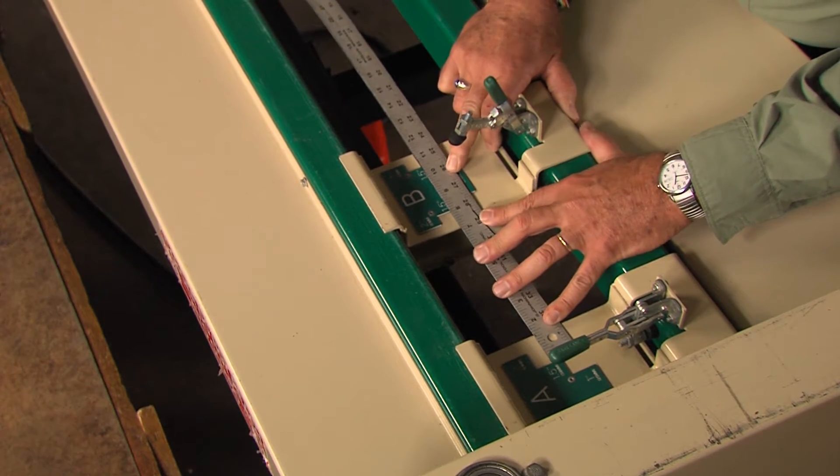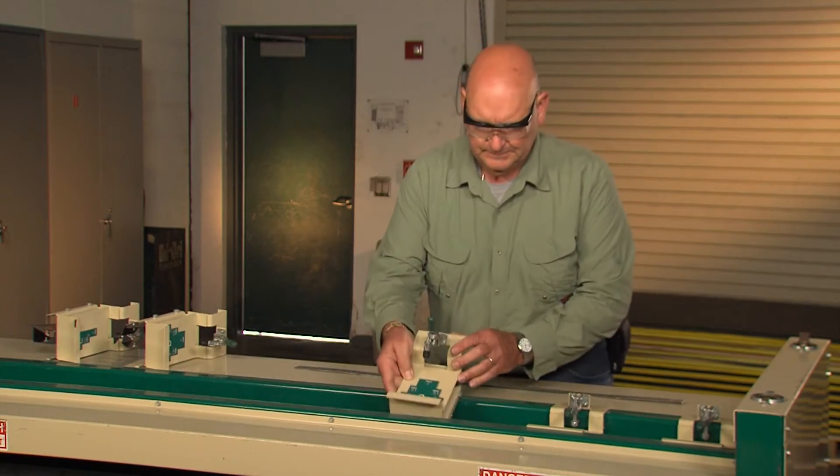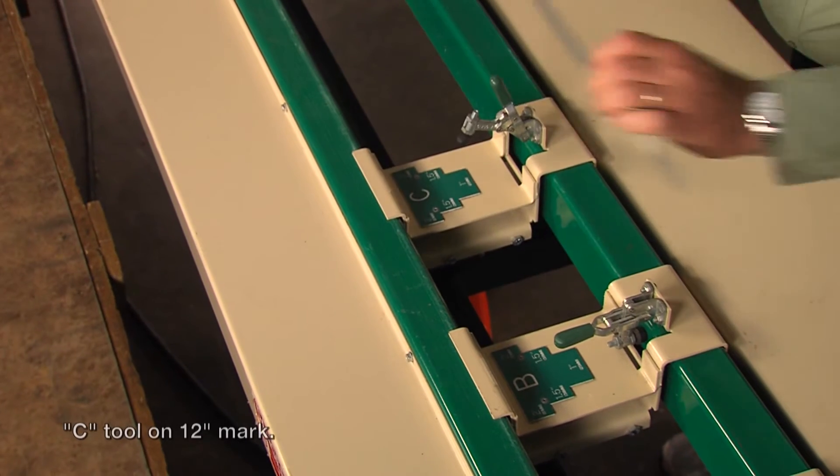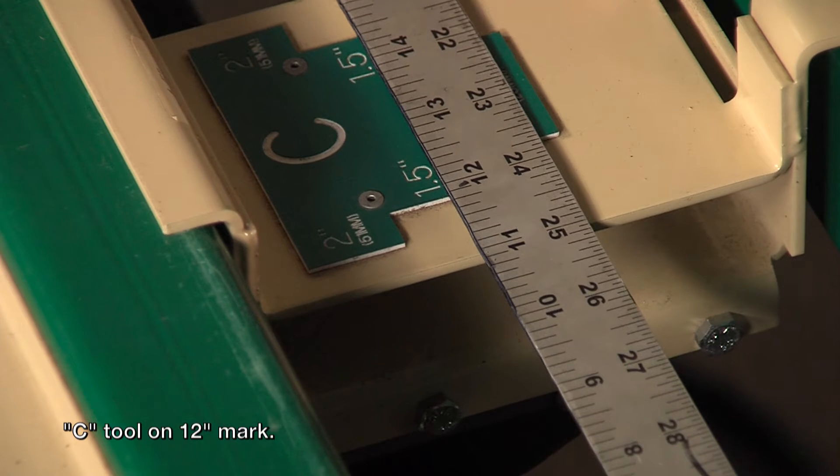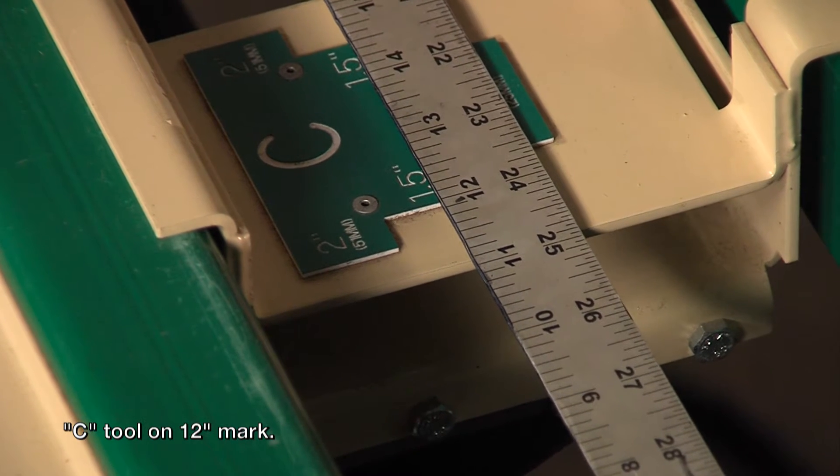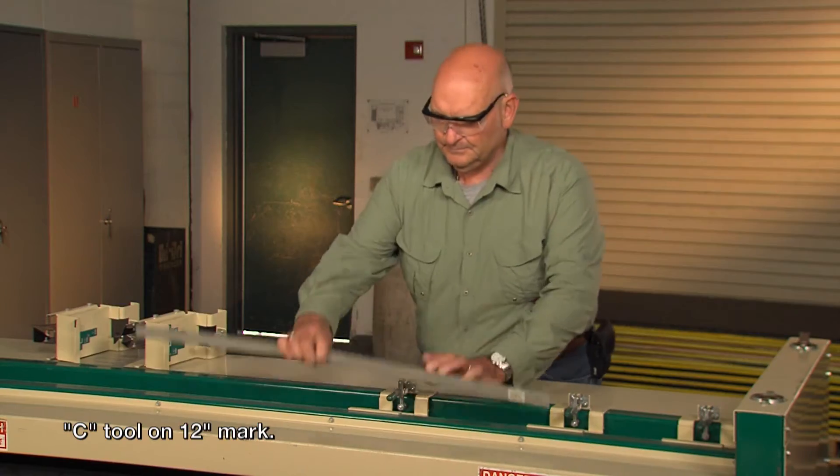Place the C tool on the toolbar. Place your rule on the right side of the B tool one and a half inch tab and move the C tool closer. When the left side of the one and a half inch tab on tool C aligns with the 12 inch mark on the rule, push it back and lock it down.